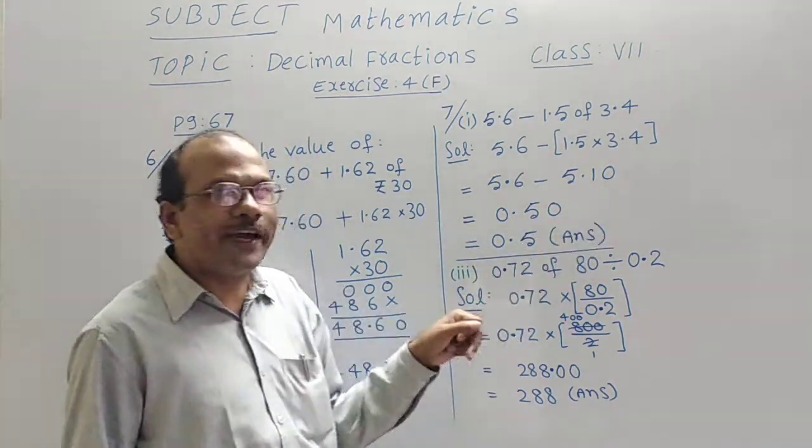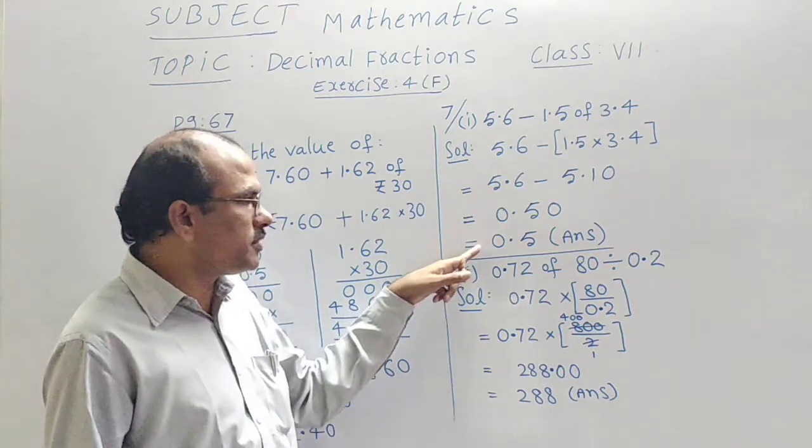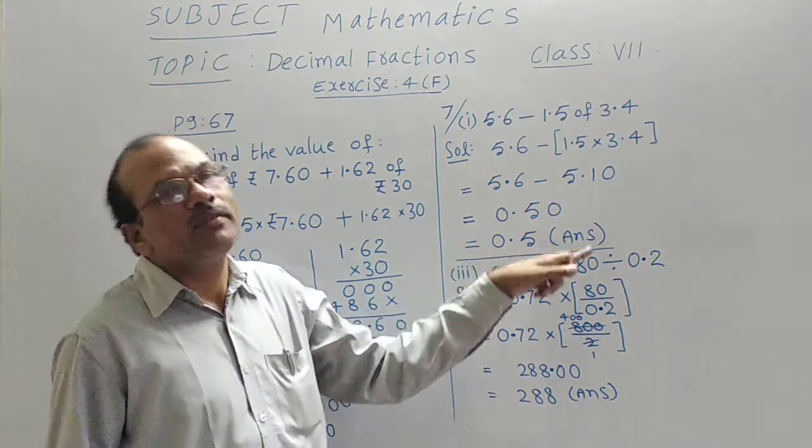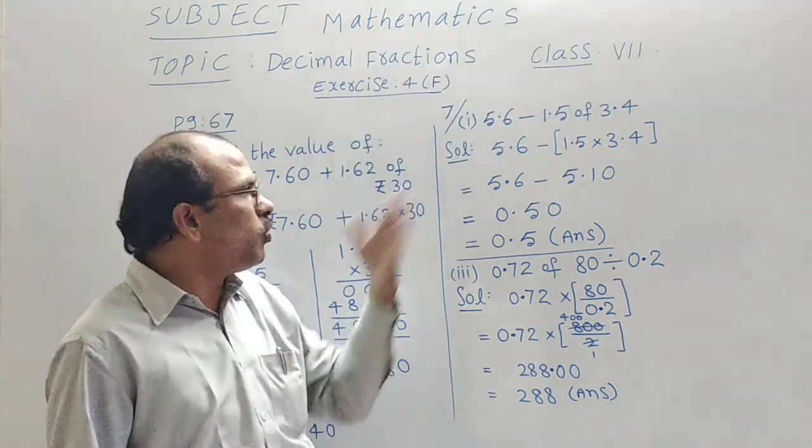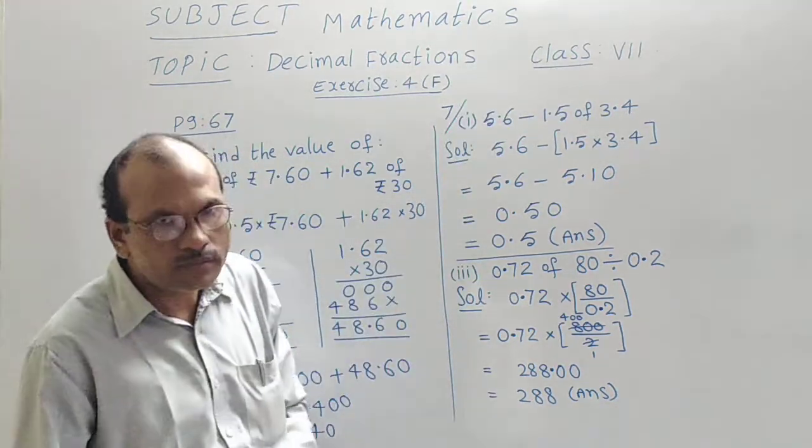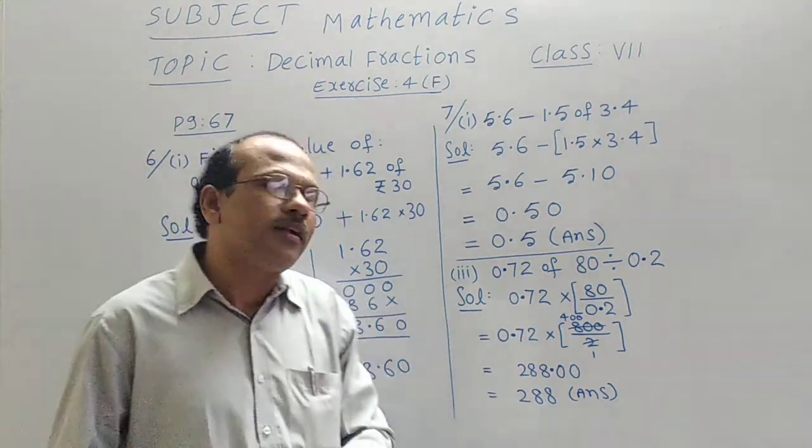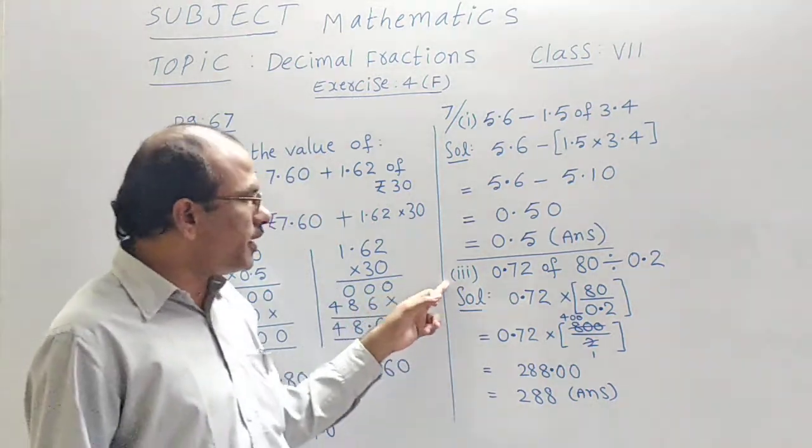That 0 has no value, so I have ignored that. 0.5. That becomes the answer for the first bit in the seventh question. I hope it is very clear for you. Clear now students?